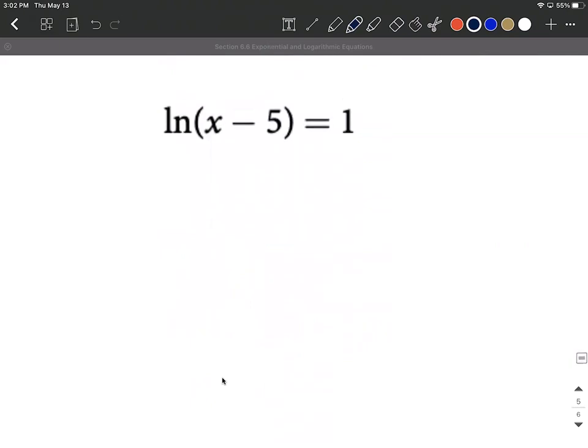What about when we have natural log of x minus 5 equals 1? Well again it's natural log so that's a base of e, so we can just say e to the first power equals whatever's on the inside, x minus 5. To get x all by itself we'll add 5 to both sides.